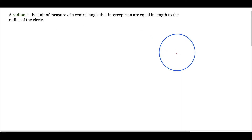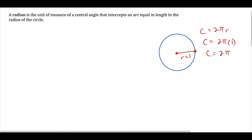The way that I understand it — because sometimes the definitions can be a bit confusing — is I look at the unit circle, and on the unit circle the radius is equal to 1. And if we look at the circumference, which comes from the equation 2πr, for the unit circle the circumference with r=1 is just 2π. I imagine taking a pair of scissors and cutting the unit circle and taking the circumference and extending it out into a line.